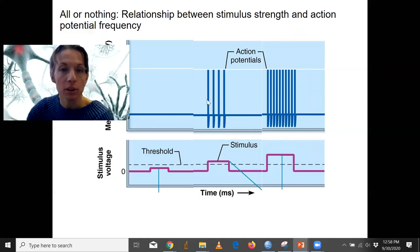The relationship between stimulus strength and action potential frequency is: the higher the strength of the stimulus, the higher the frequency of action potentials, not the size of the action potentials themselves.